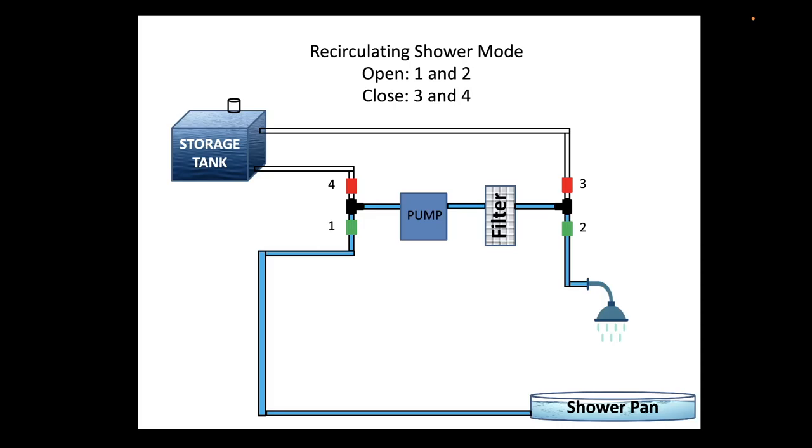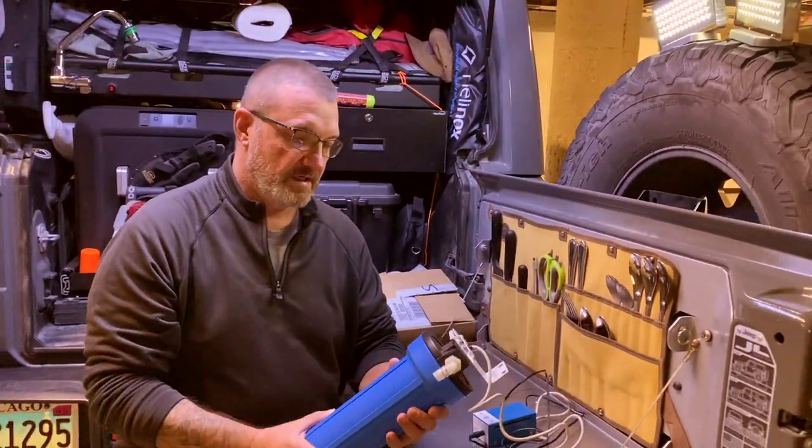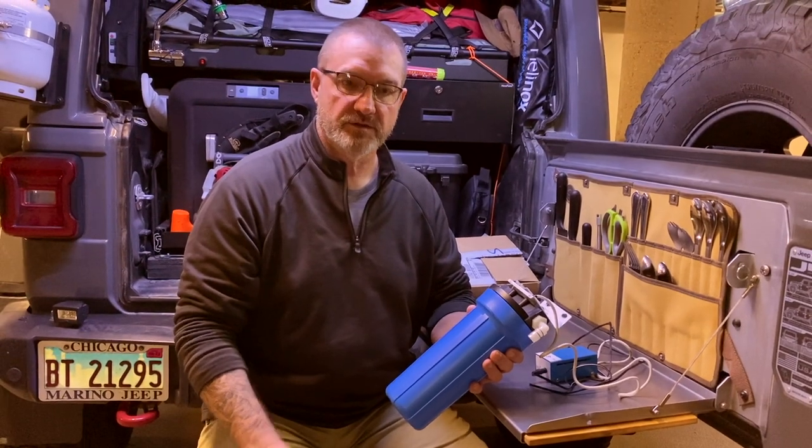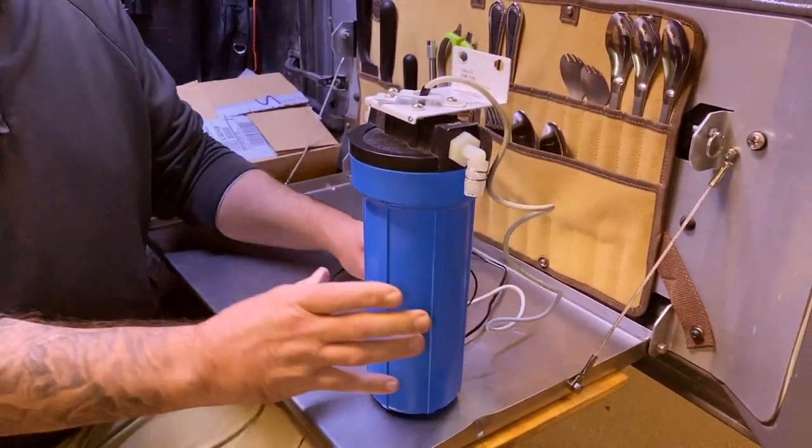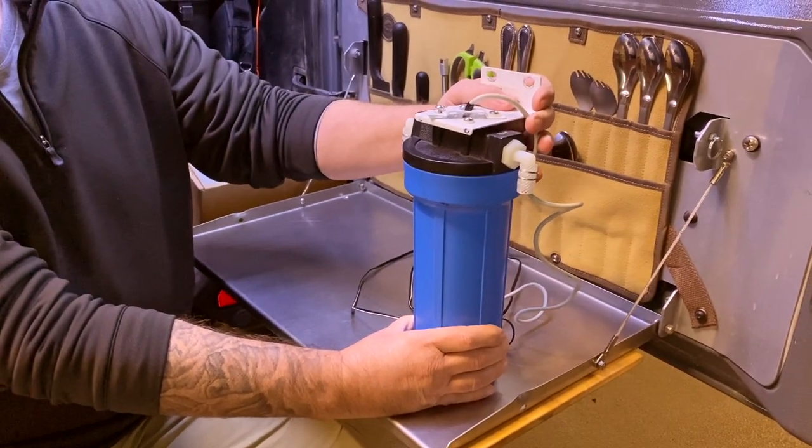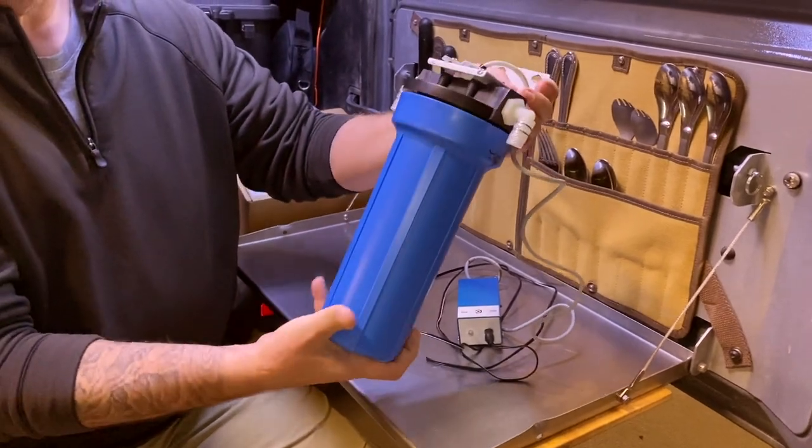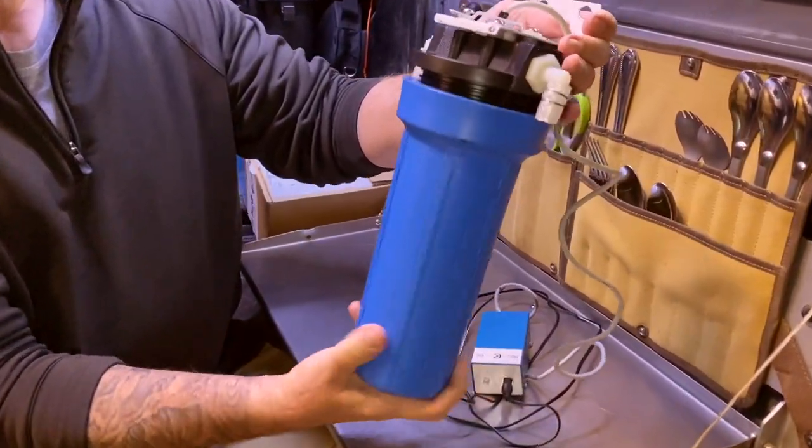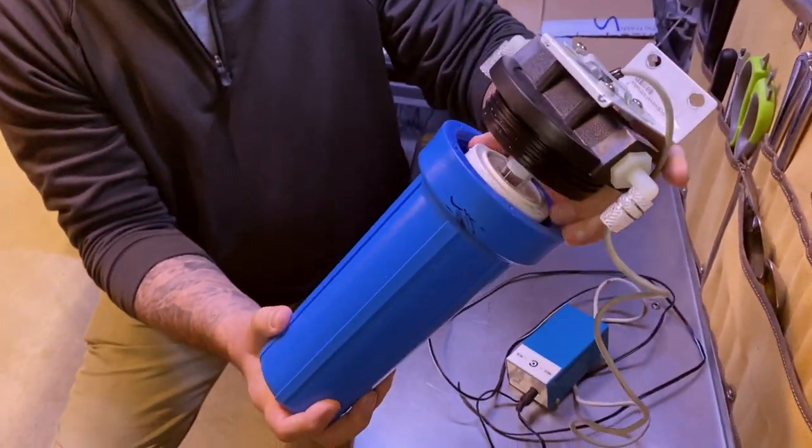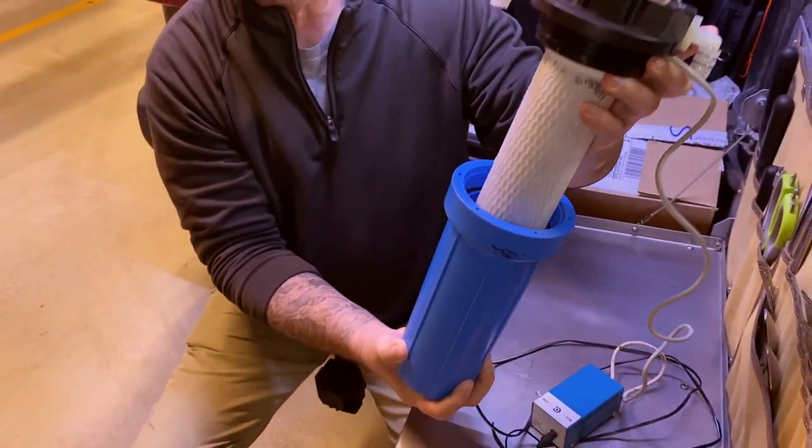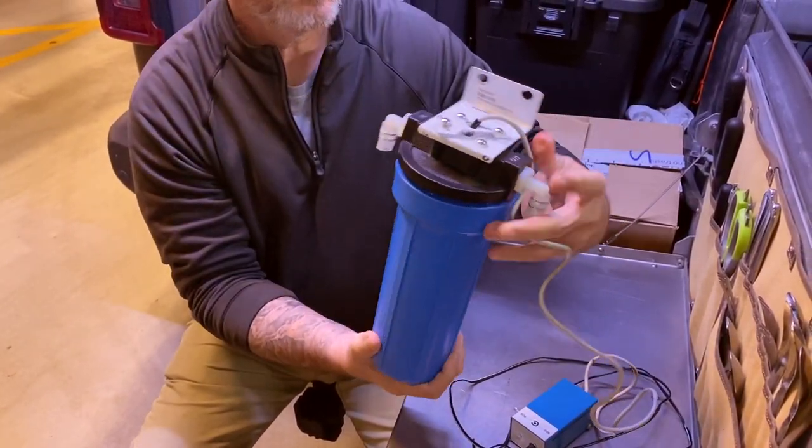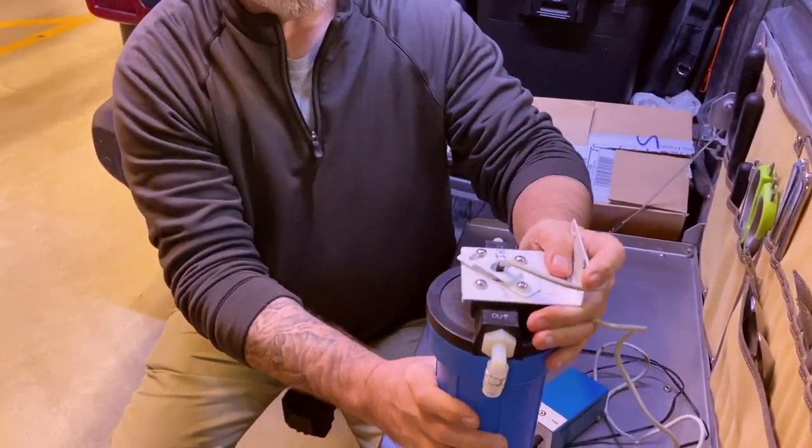Now let me tell you the tale of two filters as I call it. This is the old filter that I had installed in the jeep. It's made by Pura. As you can see how large it is, this is the carbon filter that mounts in the jeep. It's a large carbon filter cartridge that gets screwed down underneath.